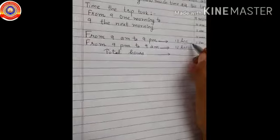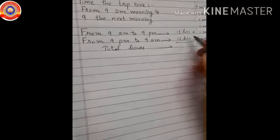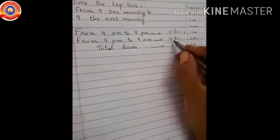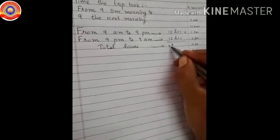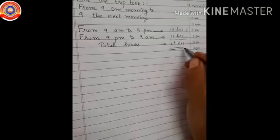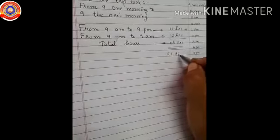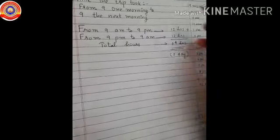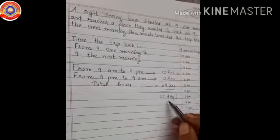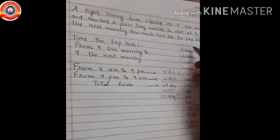So total hours will be 12 hours plus 12 hours. 12 plus 12 equals 24 hours. You know that 24 hours make 1 day. So how much time did the trip take? 24 hours — that is 1 day. The trip took 1 day to complete.